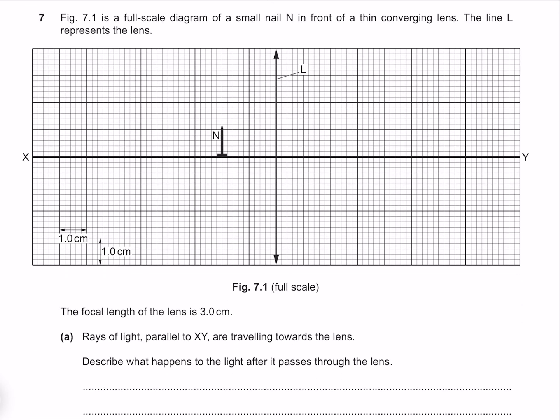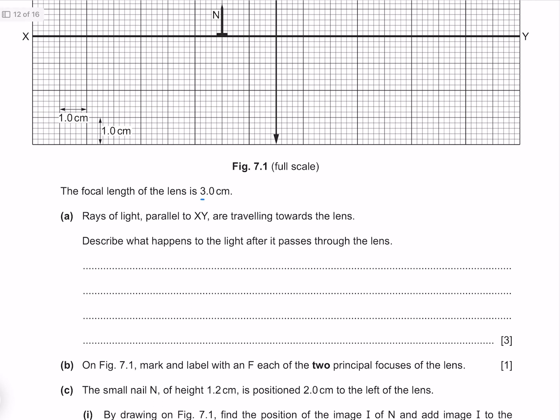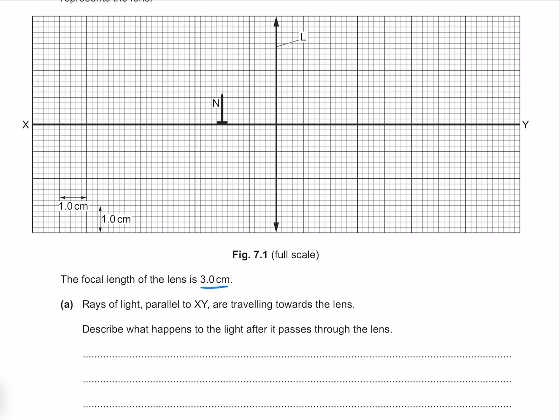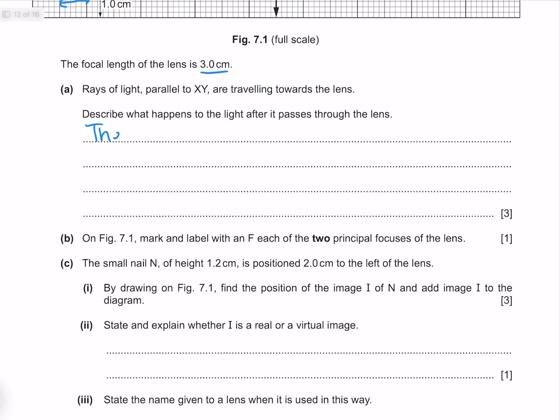Figure 7.1 is a full-scale diagram of a small nail N in front of a thin converging lens. The line L represents the lens. The focal length of the lens is 3cm. Rays of light parallel to XY are traveling towards the lens. Describe what happens to the light after it passes through the lens. First of all, if this is our 1cm, then our focal points are here. If we have parallel rays of light, these are going to converge to our focal point. The rays converge to the focal point and then diverge.